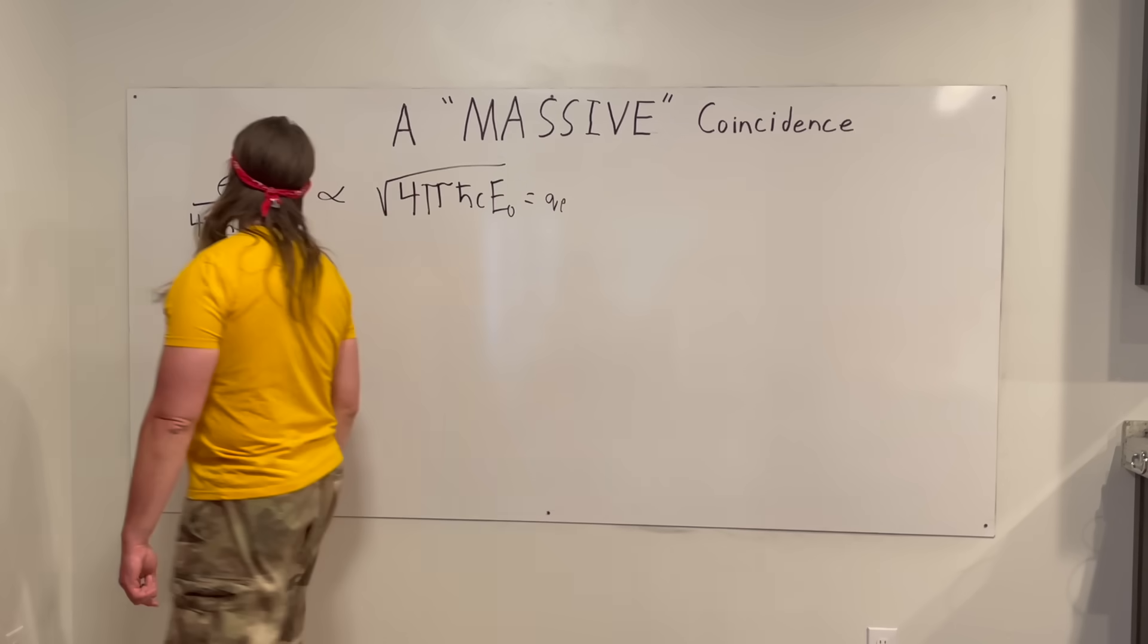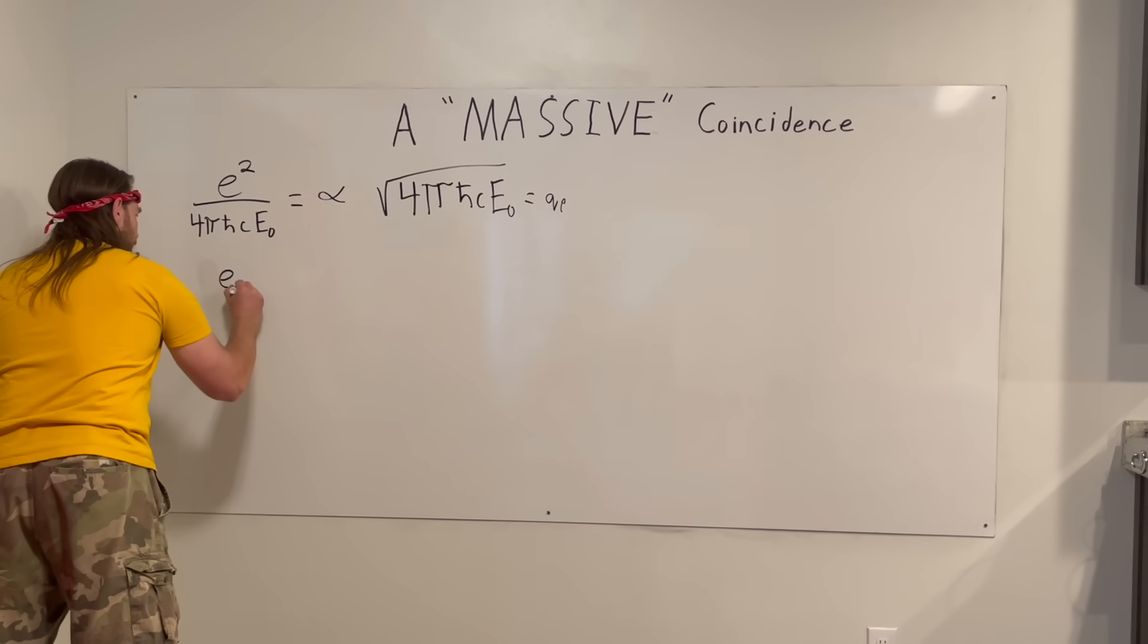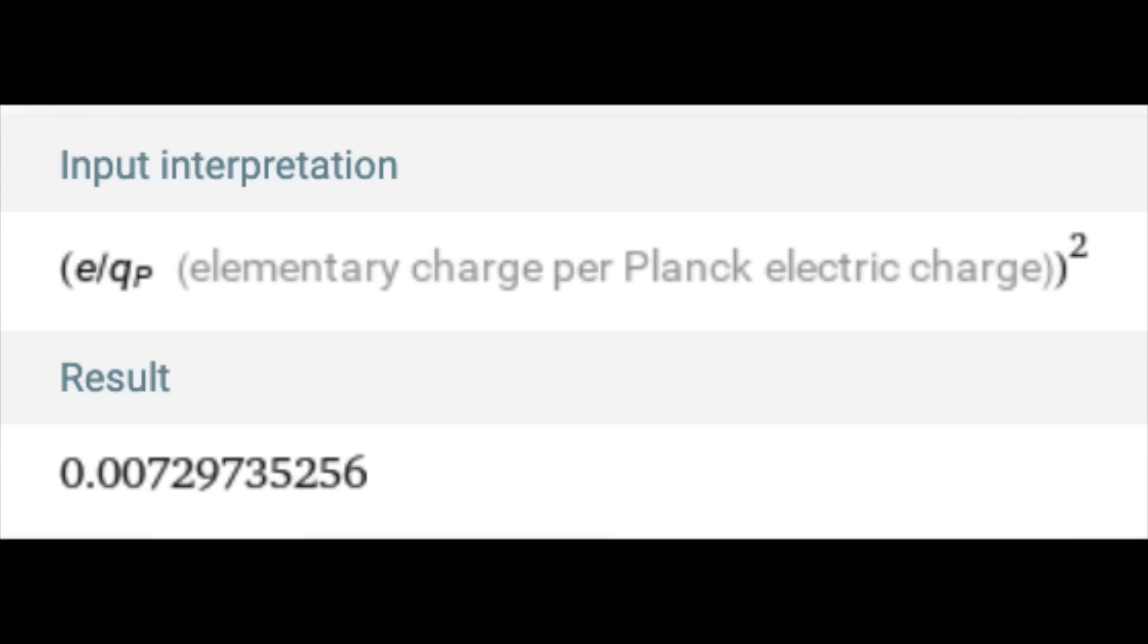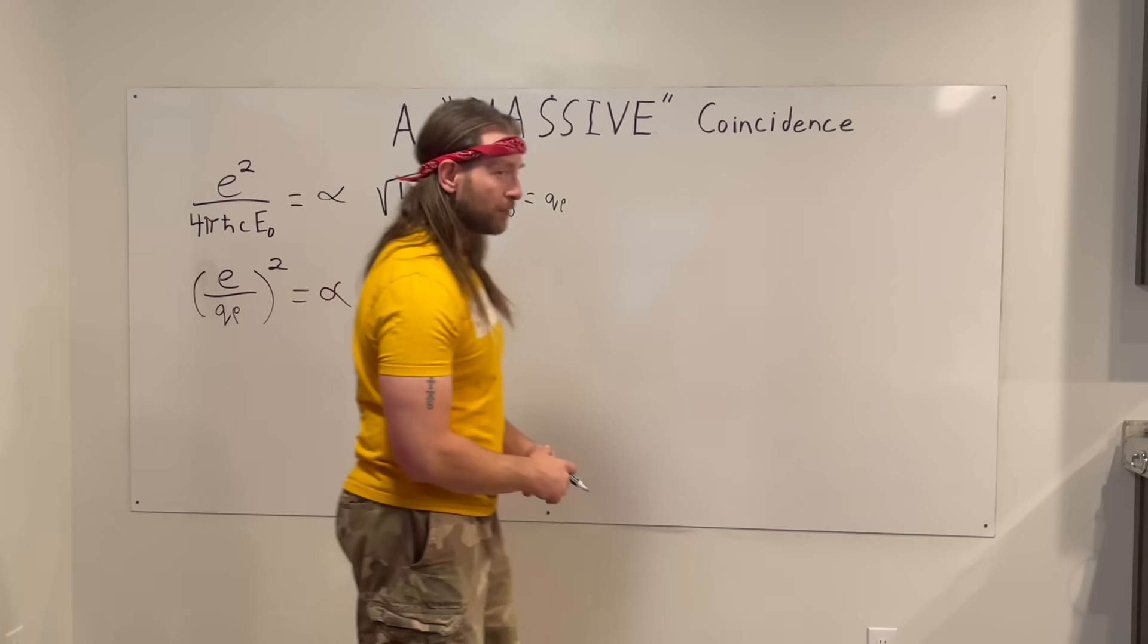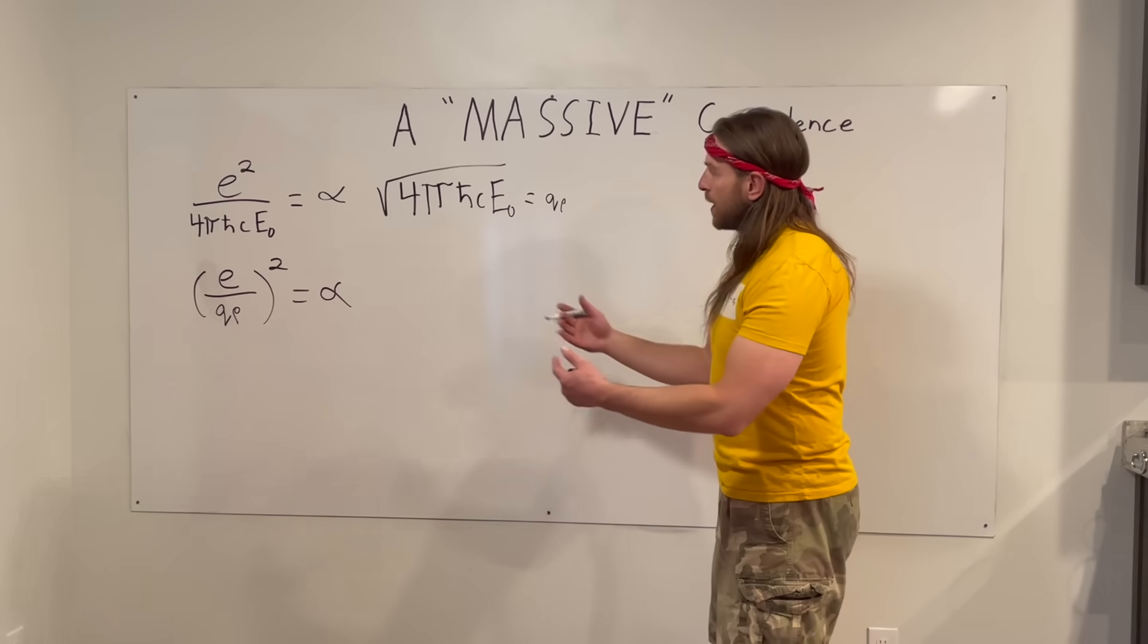And the reason why it's neat is because then we can simplify this thing here to elementary charge over Planck charge, and we square the whole thing. That also gives us alpha. I thought that was pretty neat. People have known about this. You see this around.